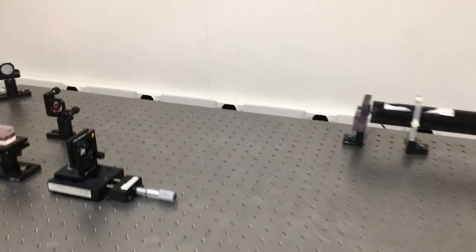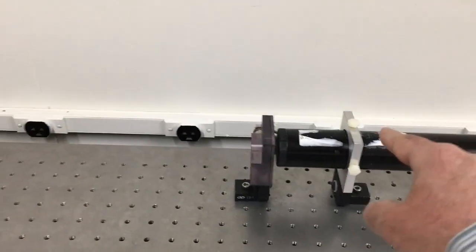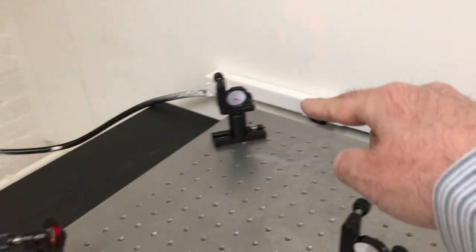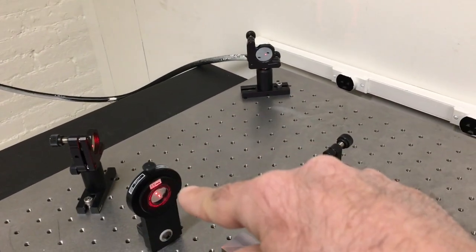So here's our interferometer. Let's take a look. Starting from the laser, the beam travels to the mirror, second mirror, through a lens.